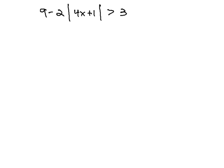Recall, with absolute value equations and absolute value inequalities, we must isolate the absolute value on one side first before we address the absolute value. This means we need to get rid of the 9 and the negative 2.